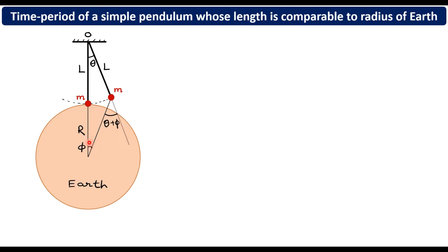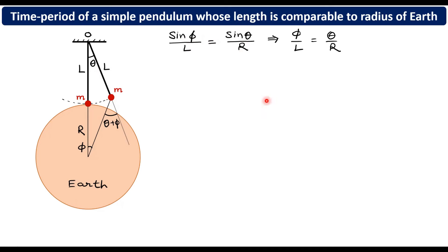We apply the sine rule: sine phi upon L equals sine theta upon this length, which we approximate as R. Since theta is very small and measured in radians, sine theta approximates to theta. Since L and R are comparable, phi is also very small, so sine phi approximates to phi. The equation becomes phi over L equals theta over R, giving phi equals (L/R) times theta. That is the geometrical part.